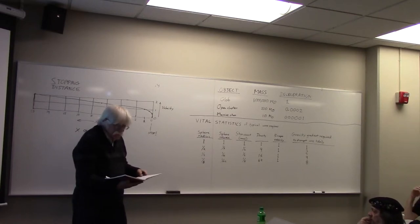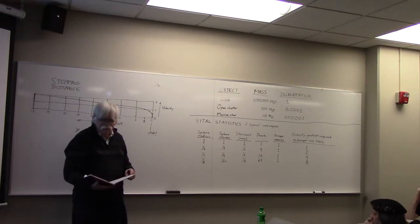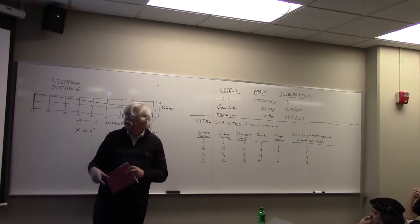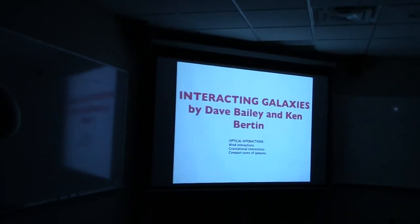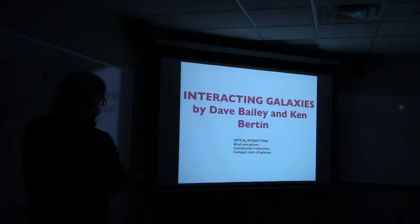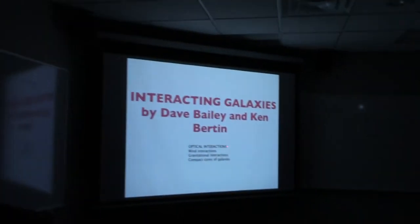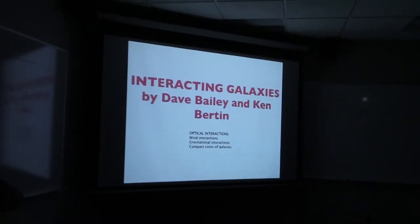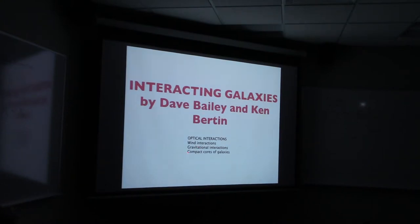I've used about 34 minutes — time to go to the second part. Let's kill the lights. Okay, what we're going to look at: optical interactions, where light from one galaxy passes near another; wind interactions, where gas hits gas; gravitational interactions, the big thing; and compact galaxy cores. Let's go.